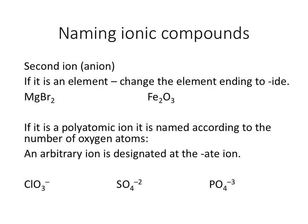When naming the second ion — the anion, which is the negative ion — in an ionic compound, if it's an element, change the ending to -ide, just like we did for covalent compounds. So Mg we just said was magnesium, and Br is bromide. You do not need the prefix like dibromide because this is not covalent, it is ionic.